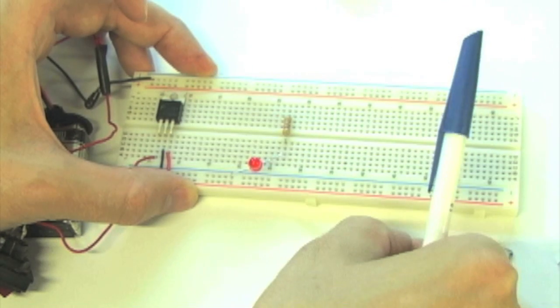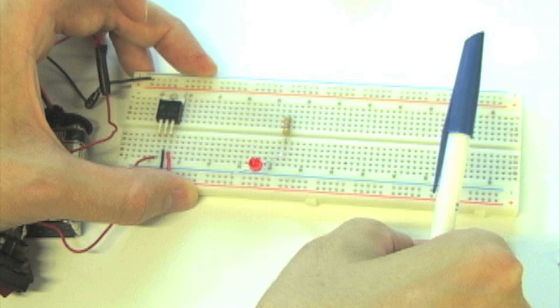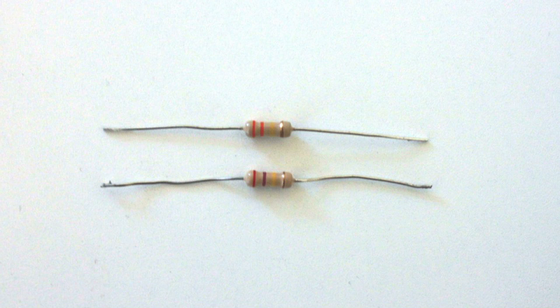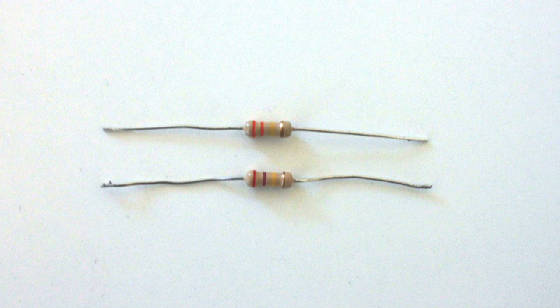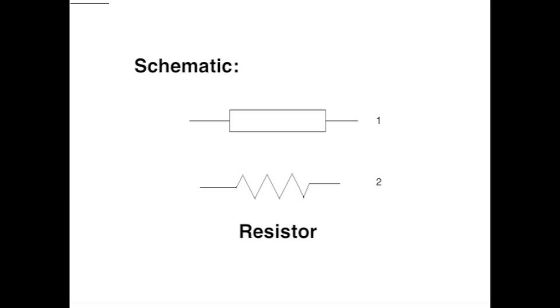We have to connect the resistor between the anode of the LED and another row on the breadboard. Resistors are nonpolar and can be placed in either direction. The values of resistors are marked by color-coded bands. There are two schematic representations of resistors.